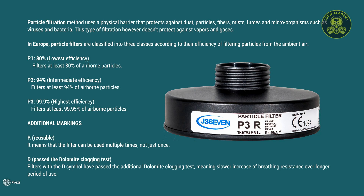In Europe, particle filters are classified into three classes according to their efficiency of filtering particles from the ambient air. P1 filters have the lowest filtration efficiency, while P3 filters have the highest. An additional R marking means the filter can be used multiple times. Filters marked with the D symbol have passed the dolomite clogging test, meaning slower increase of breathing resistance over longer periods of use.